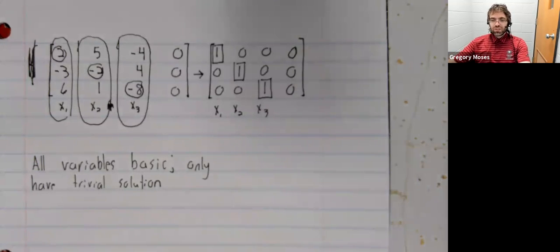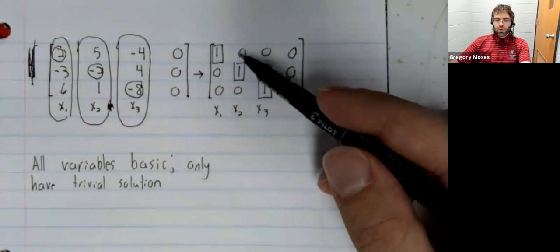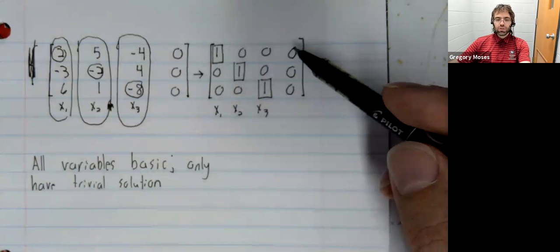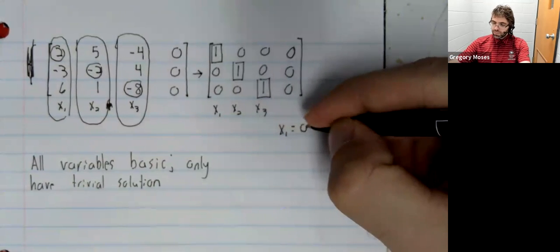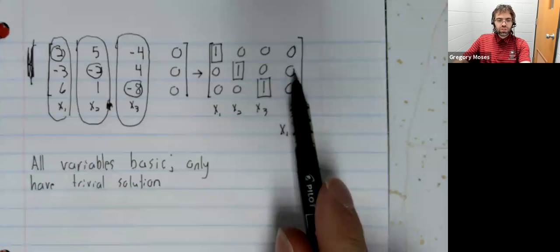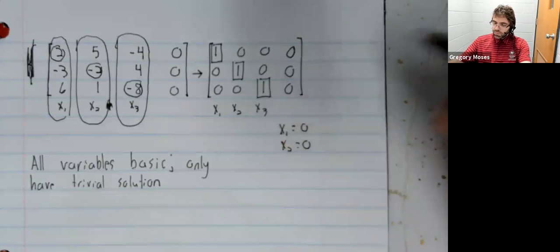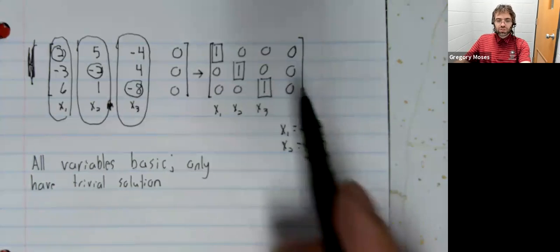And since this is in reduced row echelon form, we can read the solution off. 1x1 plus 0x2 plus 0x3 equals 0. x2 equals 0.